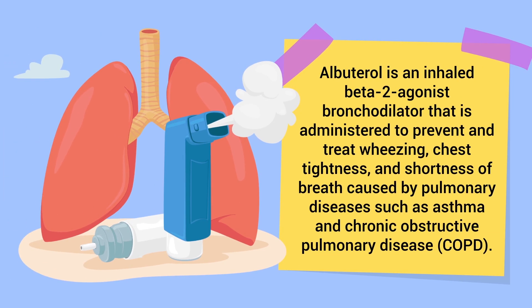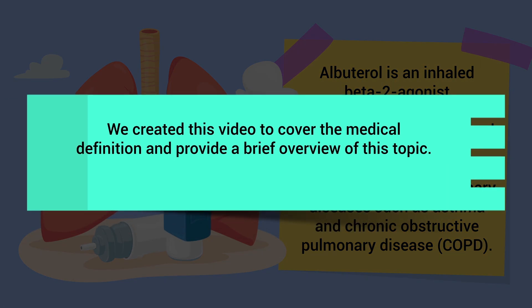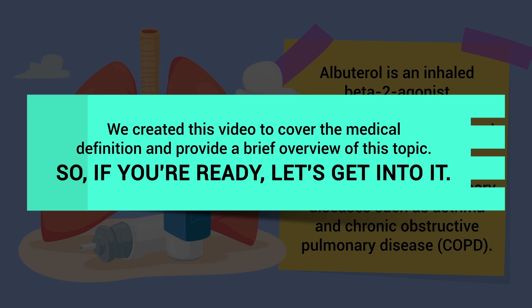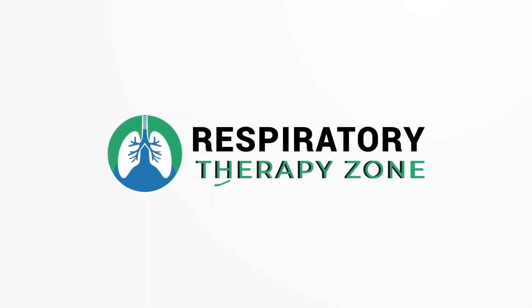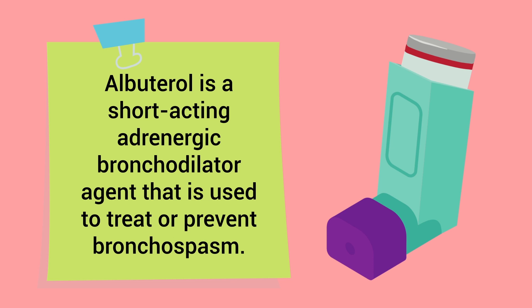Albuterol is an inhaled beta-2 agonist bronchodilator that is administered to prevent and treat wheezing, chest tightness, and shortness of breath caused by pulmonary diseases such as asthma and COPD. We created this video to cover the medical definition and provide a brief overview of this topic.